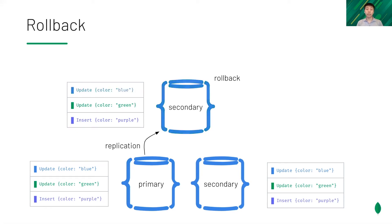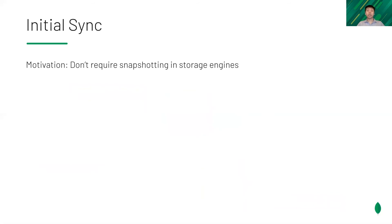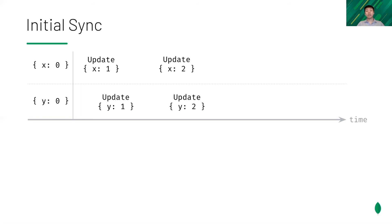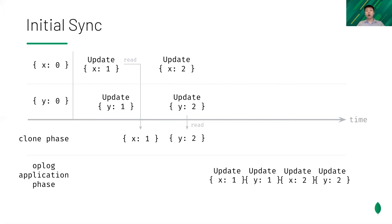The WiredTiger storage engine supports multi-version concurrency control and made this possible. Finally, the node can resume replication. Another extension is to transfer the current database state to a newly added server. Snapshotting is a common approach, but MongoDB supports multiple storage engines and the initial storage engine doesn't support snapshotting. Instead, a newly added server clones the data asynchronously. All the op-log entries generated during the clone phase will be applied to bring the database to a consistent state.